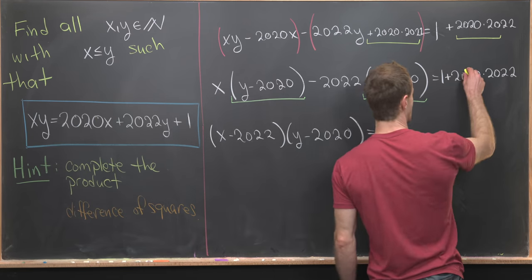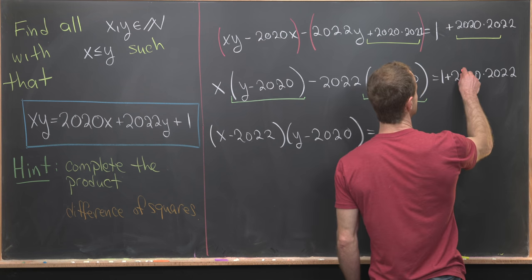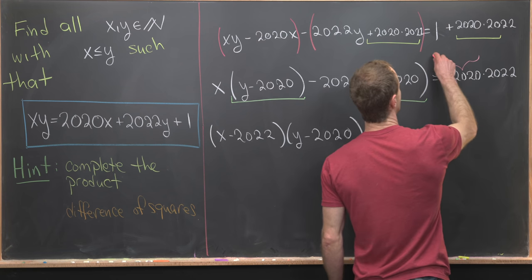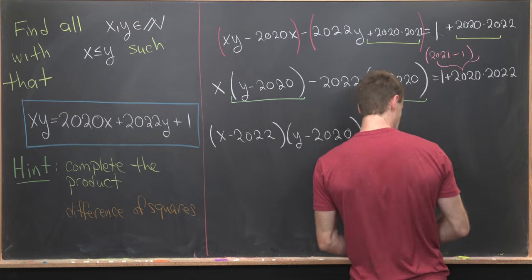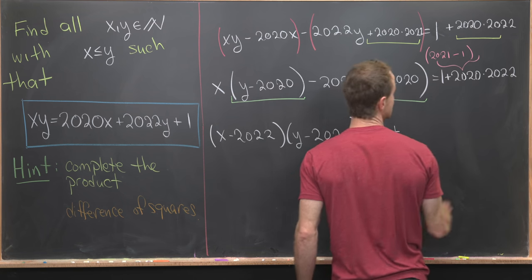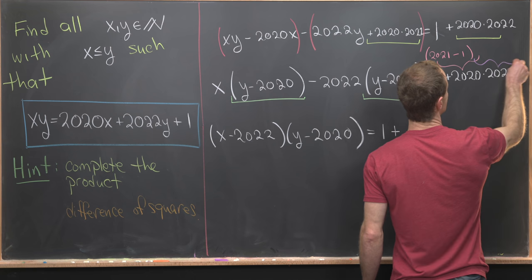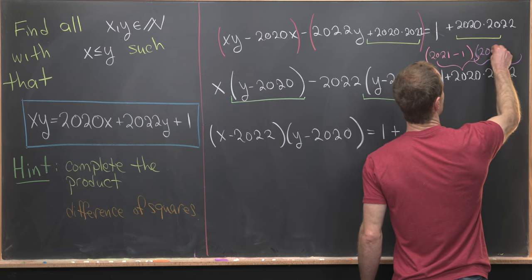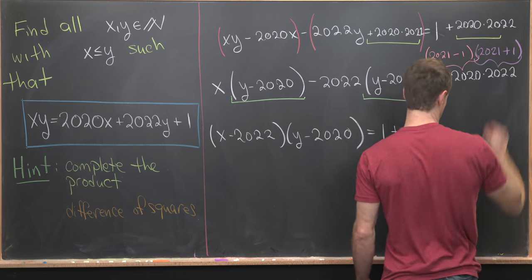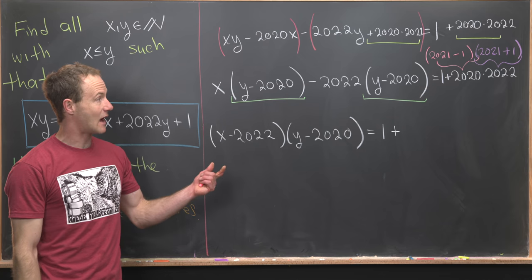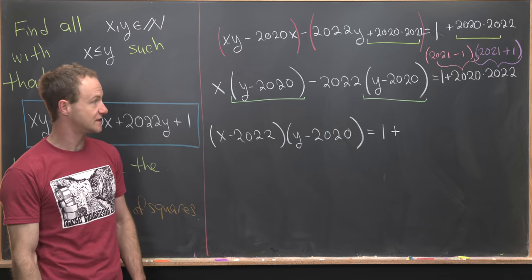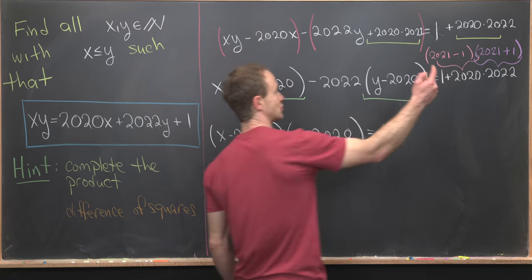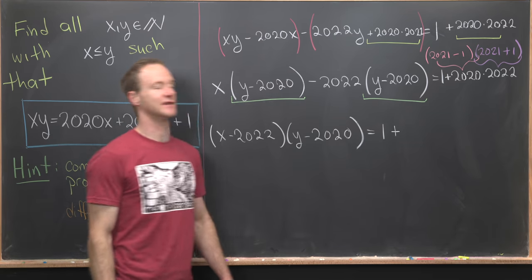So let's just reiterate that. We can take this 2020 and rewrite it as 2021 - 1. And then we can take this 2022 and write it as 2021 + 1. But foiling that out, we get a different version for 2020×2022. And that version will help us cancel this 1.